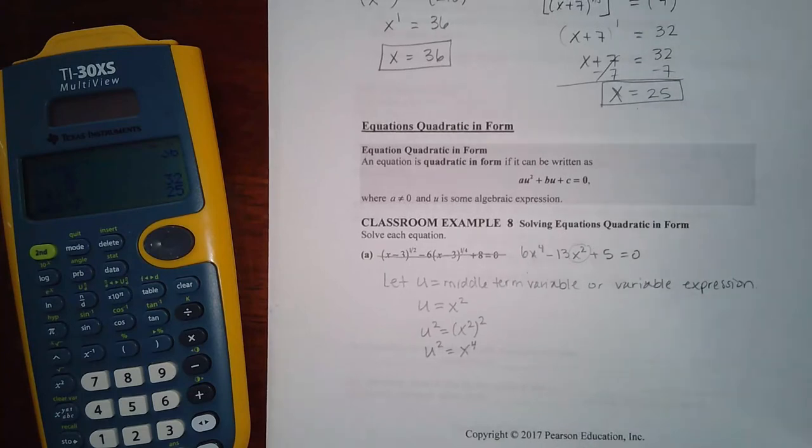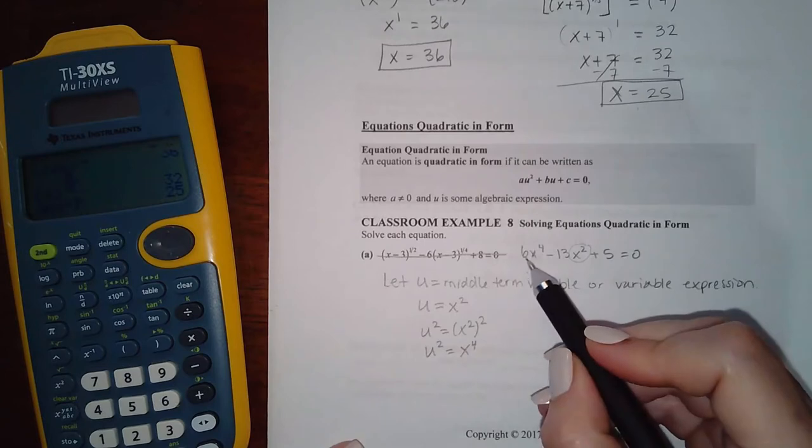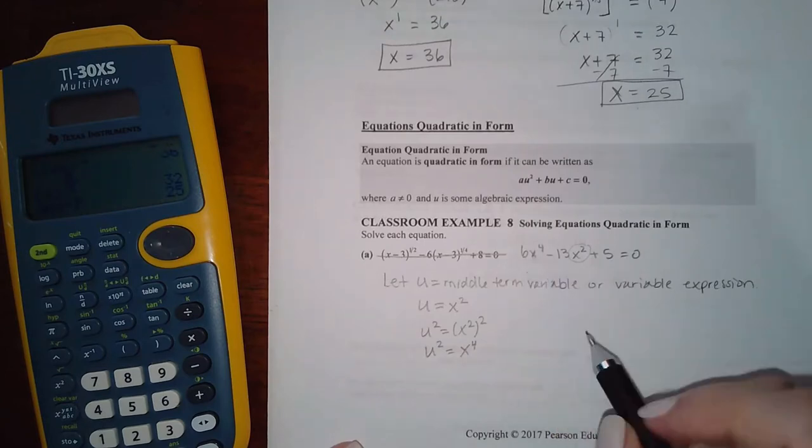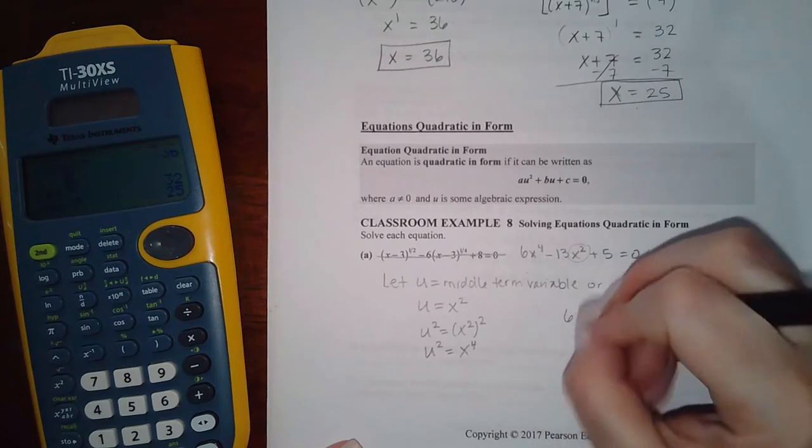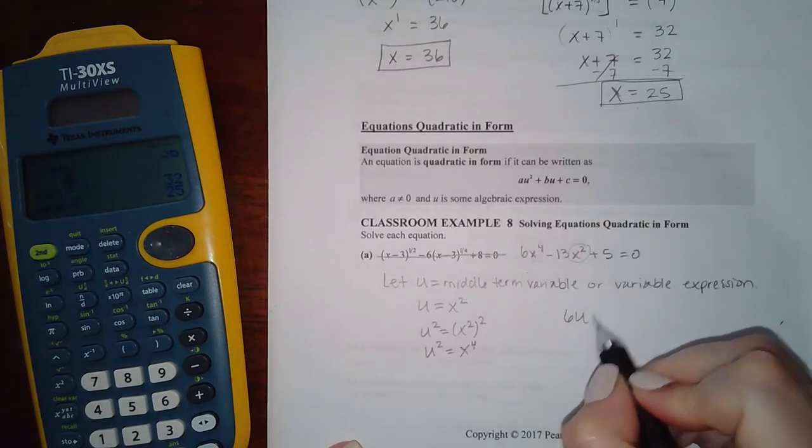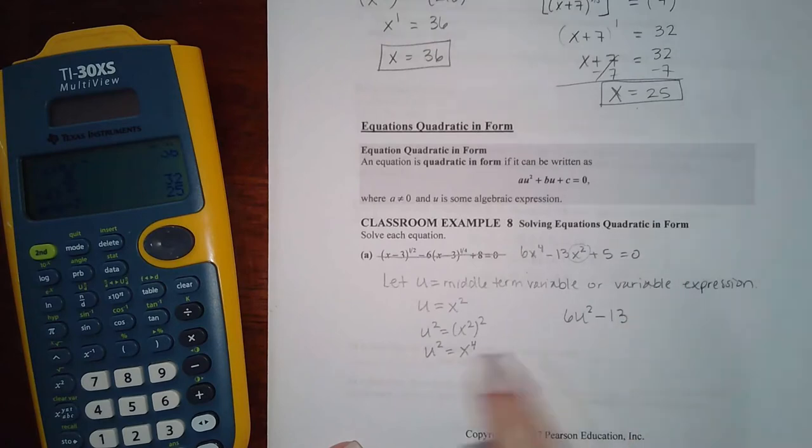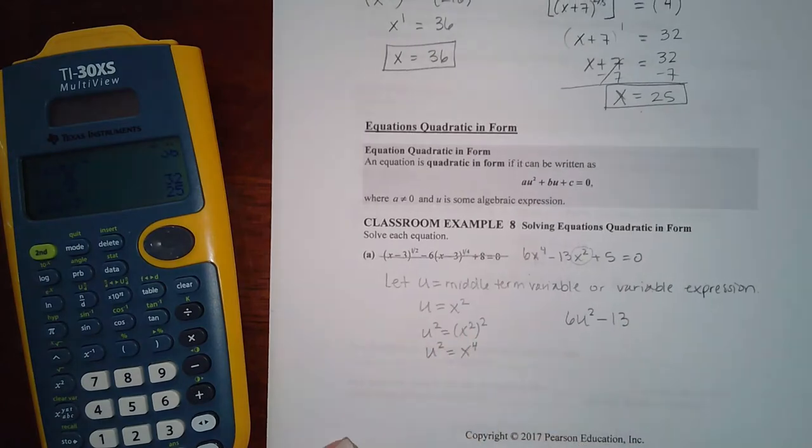So then I'm going to substitute these values into my original equation. So instead of 6x to the fourth, I'm going to write 6u squared because x to the fourth is equivalent to u squared minus 13.